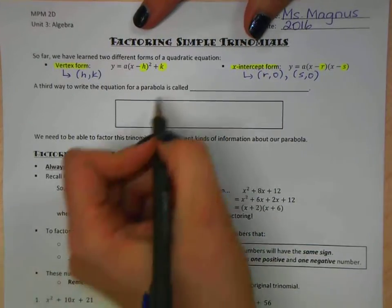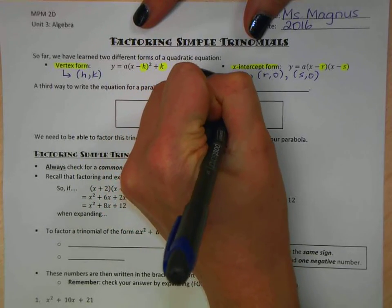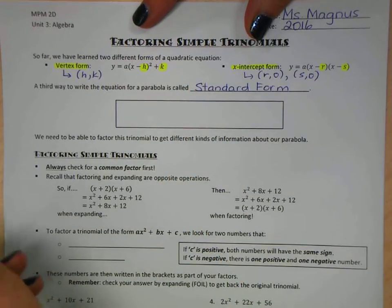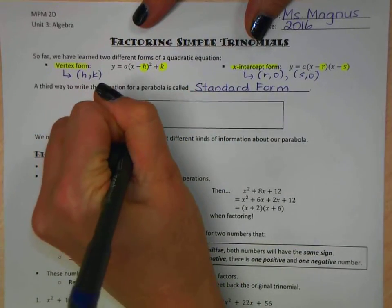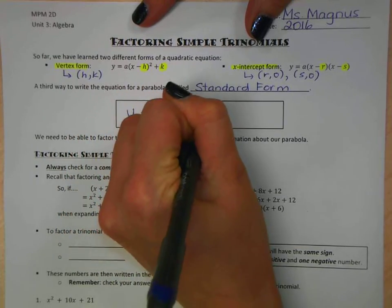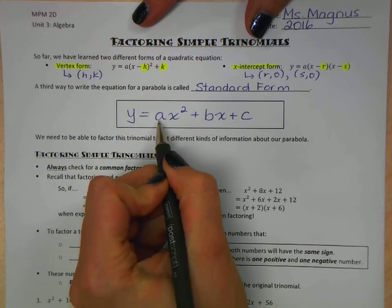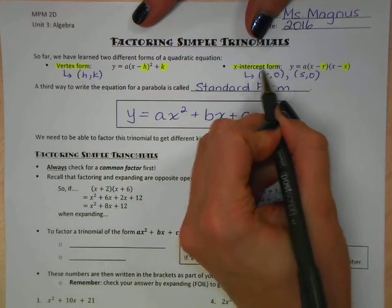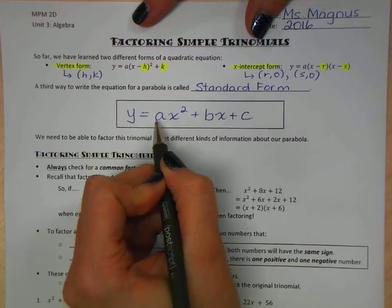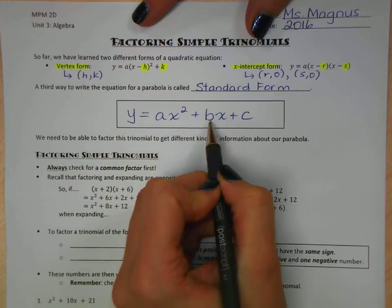A third way to write it is called standard form. And standard form looks like this: y equals ax squared plus bx plus c. Now we've already seen a before. It's in the vertex form and the x-intercept form. That's still our stretch or compression factor. But everything else, the b's and the c, we haven't used those letters before, so they mean something different.